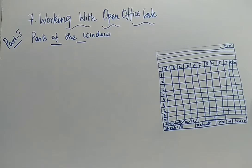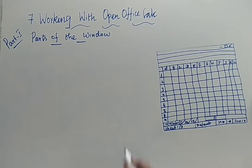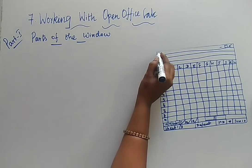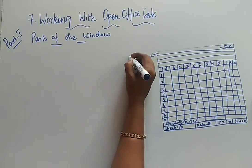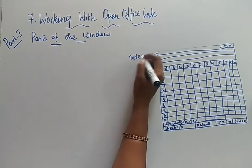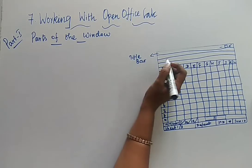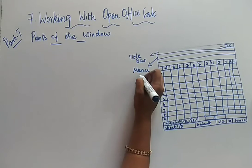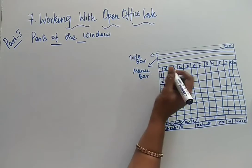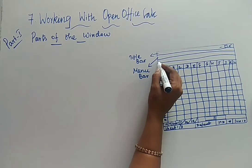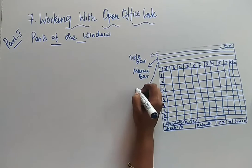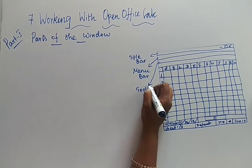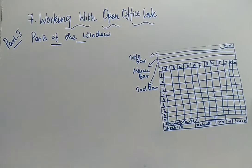What is the first line for you people? The first line is the title bar. You people are already clear with this one. First, it is nothing but your title bar. And the next one is your menu bar. And the next you will have your toolbar.